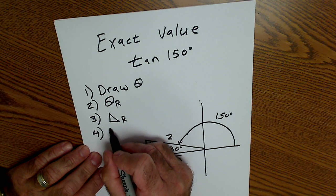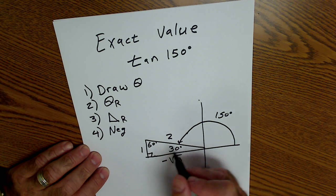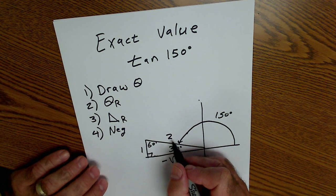Step four, remember the negatives. I'm going over a negative direction, up a positive. Hypotenuse is always positive.